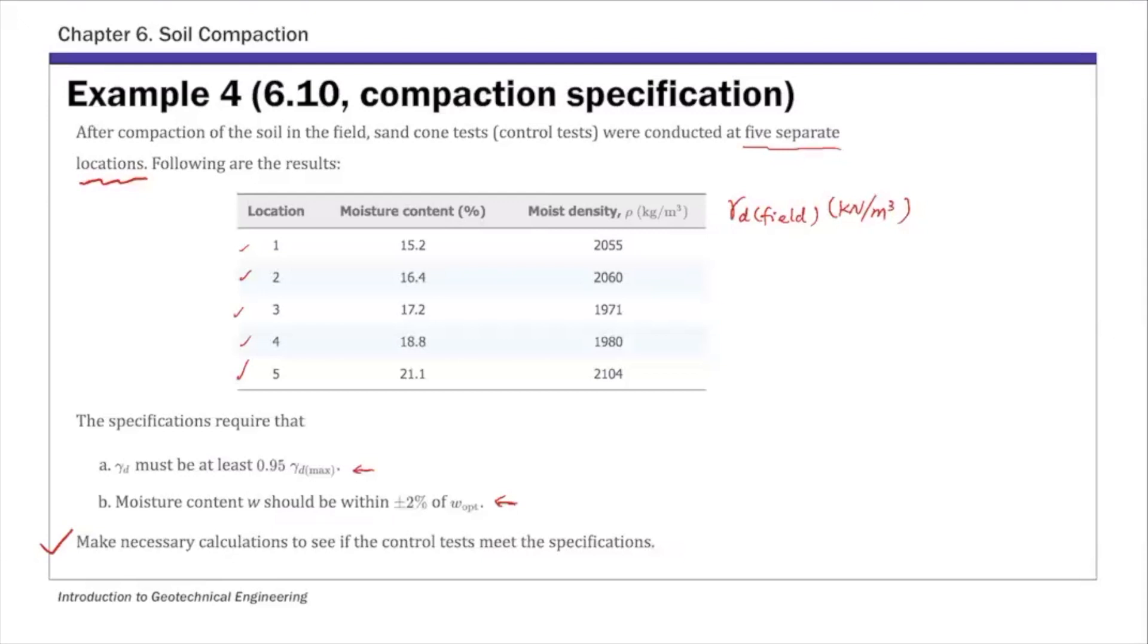And then gamma moist field is density times gravitational acceleration. This is in kilogram per meter cube.